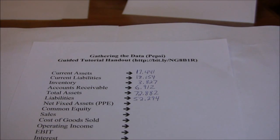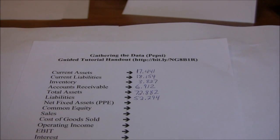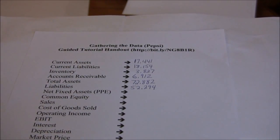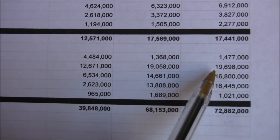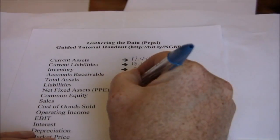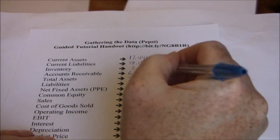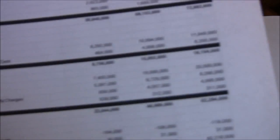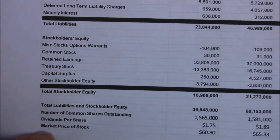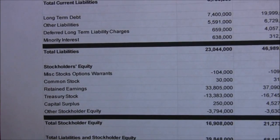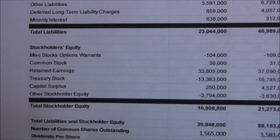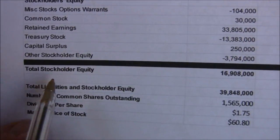Next we need net fixed assets for the fixed asset turnover ratio. Often when companies refer to net fixed assets they mean property, plant, and equipment — we find that on the balance sheet and it's $19.698 billion. The last item from the balance sheet is common equity. If a company has preferred stock we wouldn't include that, but Pepsi doesn't have that to worry about, so we use total stockholders' equity, which is $20.704 billion.